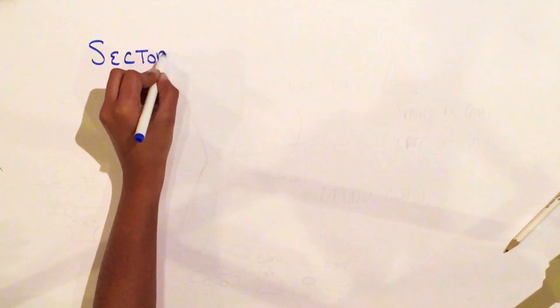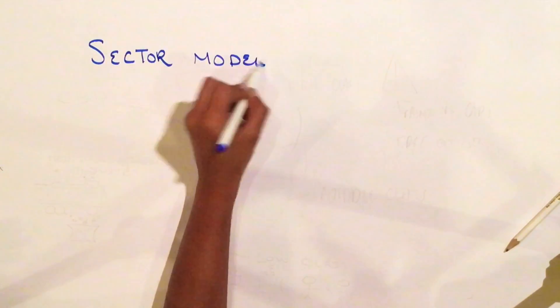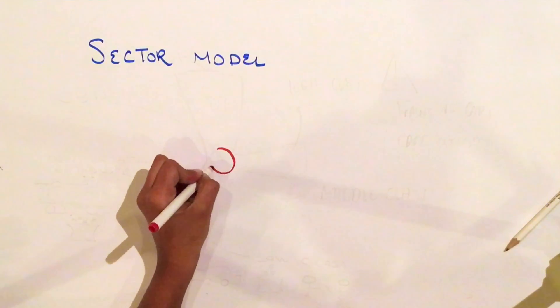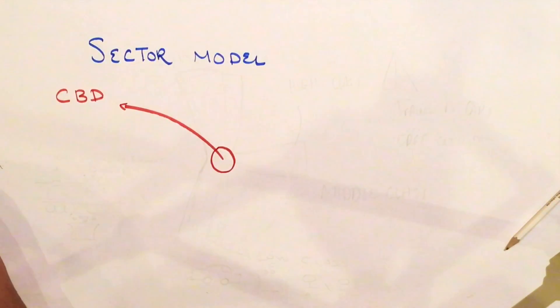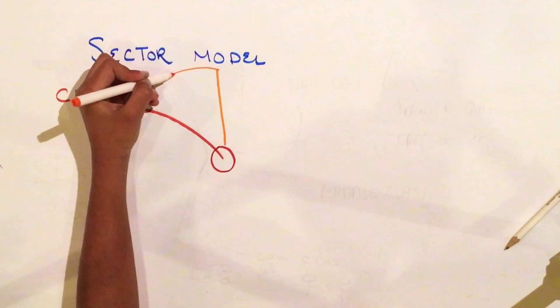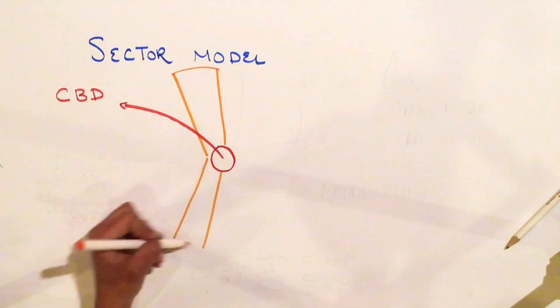The next city model we will examine is the sector model, created in 1939 by economist Homer Hoyt. This model is comprised of multiple wedge-shaped sectors which originate from the CBD in varying lengths and widths.